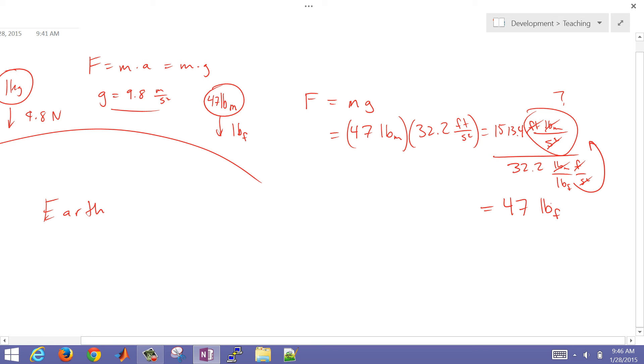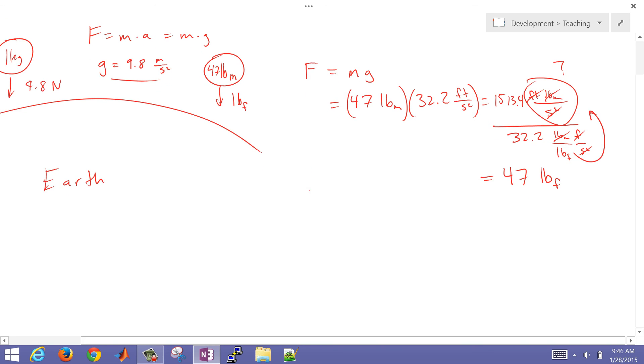Now, if we're in a location that's different than Earth in terms of the gravitational constant, we would just use this formula: F equals M times G over GC. This is really just a unit conversion, and that's always going to be 32.2,